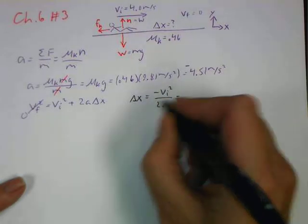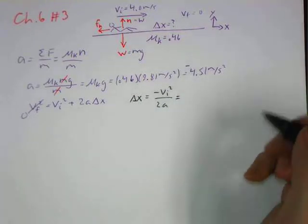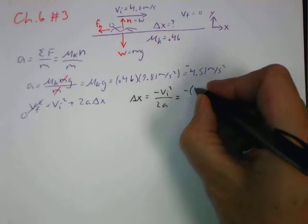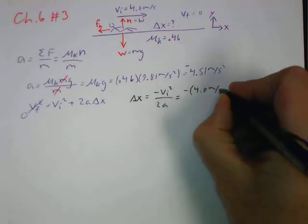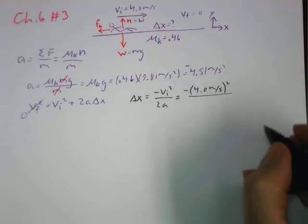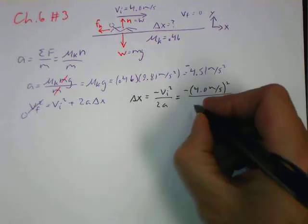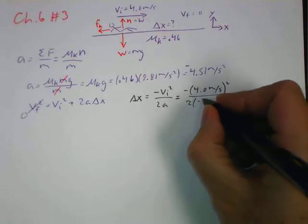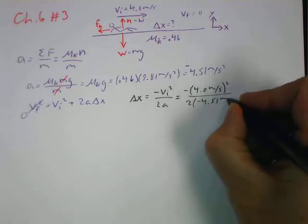Well, we're still going to get a positive delta x because our acceleration is going to go in as negative. So we've got negative of our 4.0 meters per second. That whole thing gets squared. So that's 16 meters squared over second squared. And it's negative. Divided by 2 times our negative 4.51 meters per second squared.